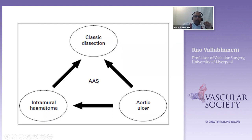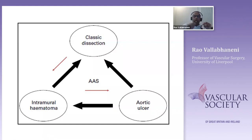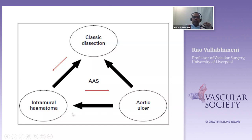An intramural hematoma that started with vasa vasorum rupturing can also become a classic dissection. It is also believed that a classic dissection can spontaneously thrombose completely, giving the appearance of an intramural hematoma. The general idea is that despite some clearly documented distinctions in etiopathology and imaging findings, these conditions occur as a spectrum with some shared features. The clinical picture can also be dynamic, where a process that started as one condition can progress into another.